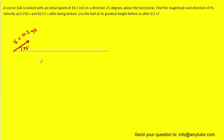Next, what we want to do is create a table that will help us organize the information that's relevant to this problem. In this table, we have the x and y directions along the top, and then we have the initial velocity, final velocity, acceleration, time, and displacement.